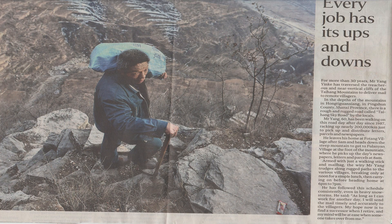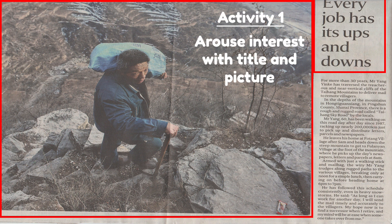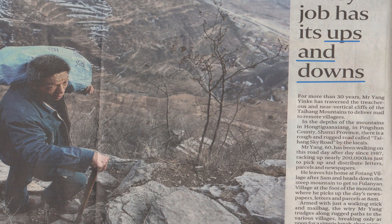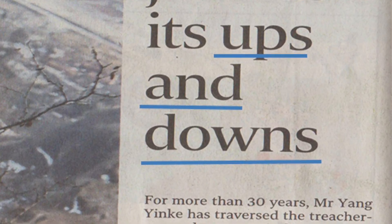Now, let me show you an article I have chosen from the Straits Times. What can parents first do with this article? Step one, arouse your child's interest to the title as well as the picture. What does your child think about these two areas? I'd like to address the topic first — the phrase 'ups and downs'. What does this mean? In this title, it would mean that a particular job has its ups and downs.